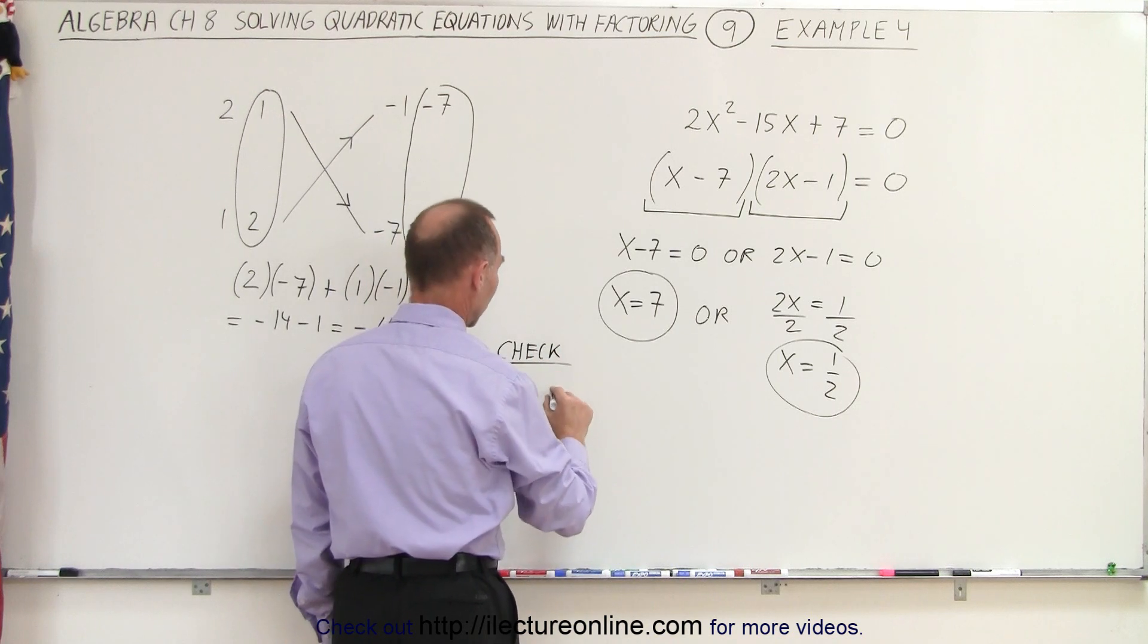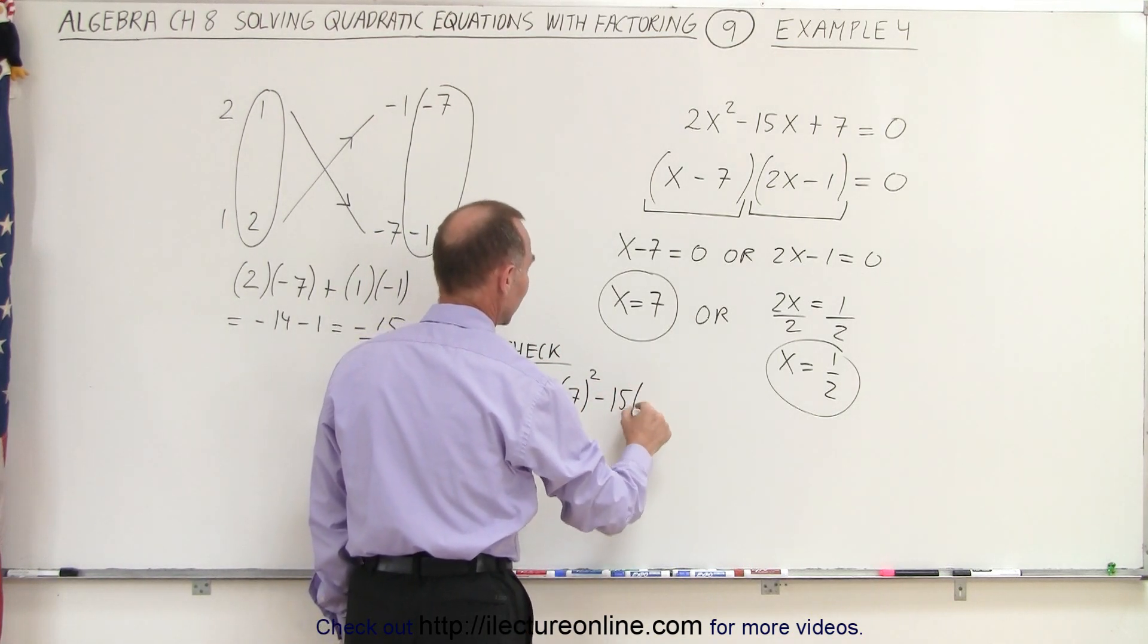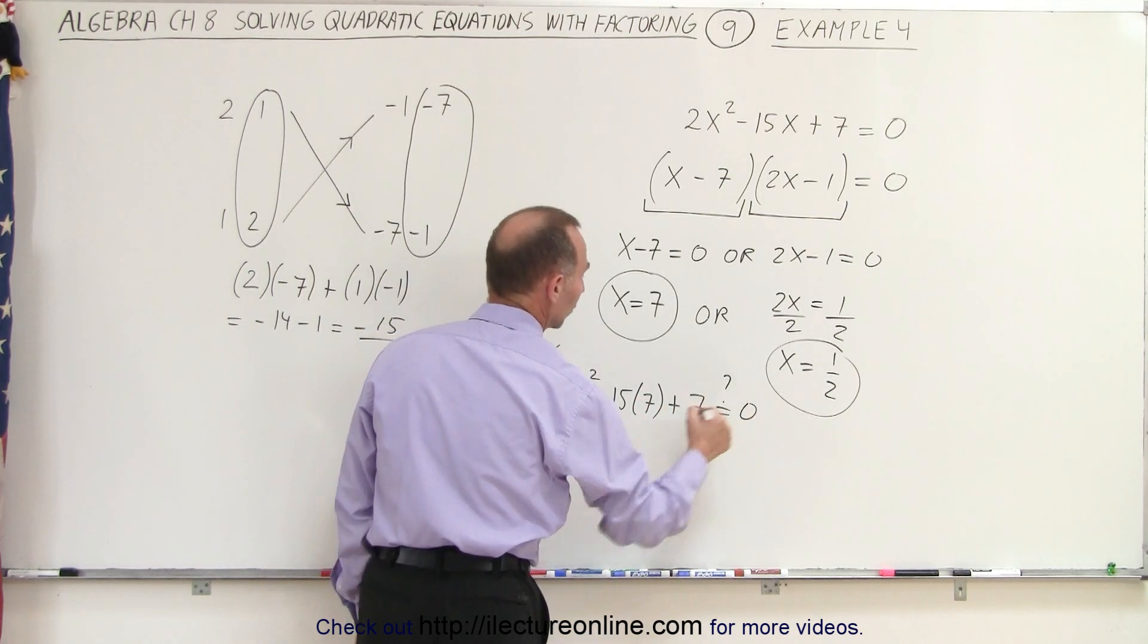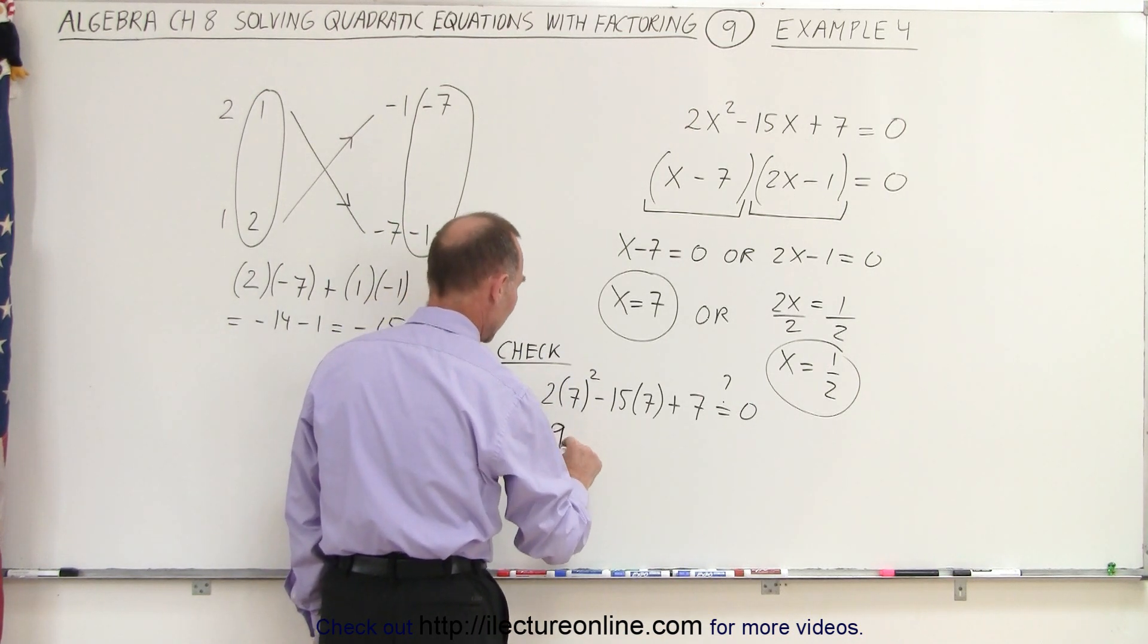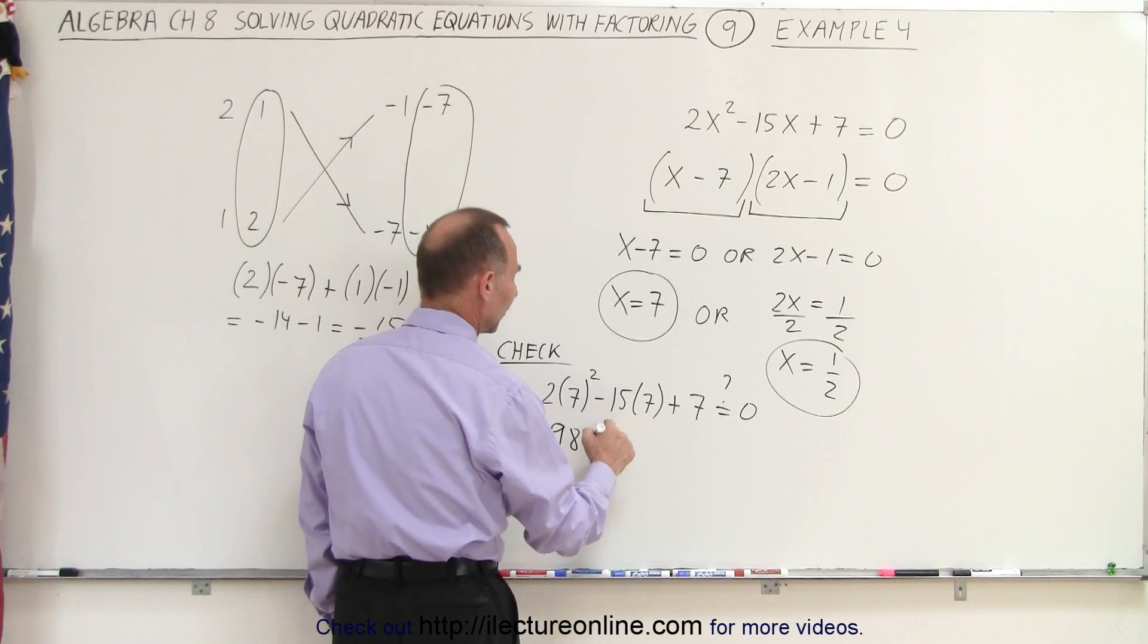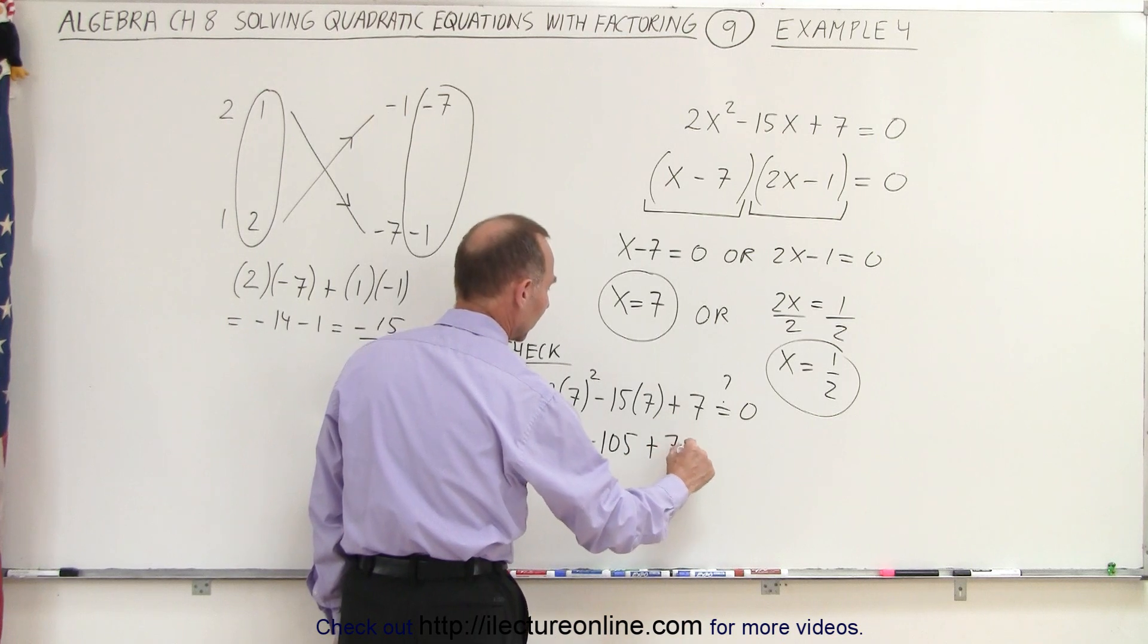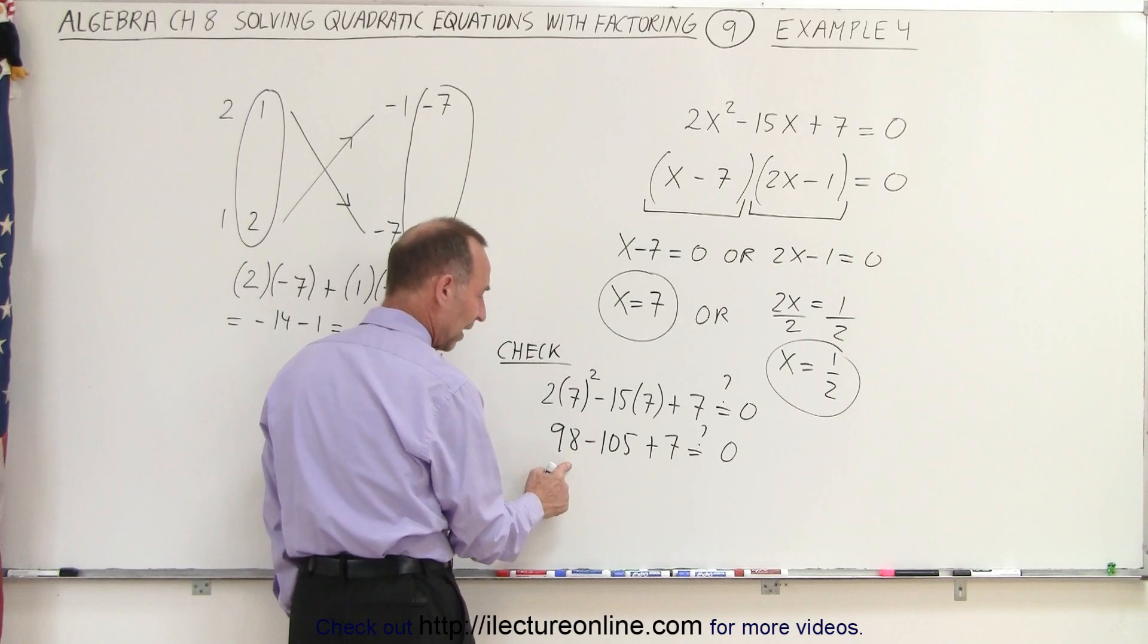So first, we're going to get 2 times 7 squared minus 15 times 7 plus 7. The question is, is that equal to 0? So 7 squared is 49 times 2 is 98. 15 times 7, that's 70 plus 35, which is minus 105, and then plus 7. Is that indeed equal to 0?